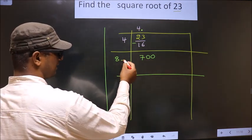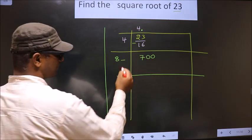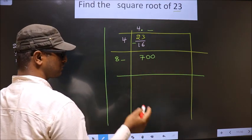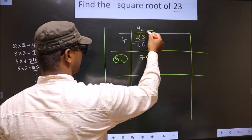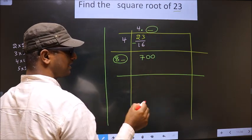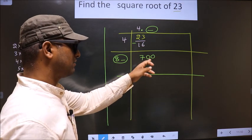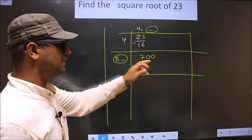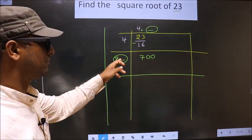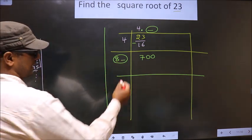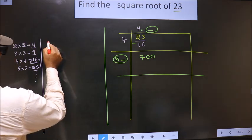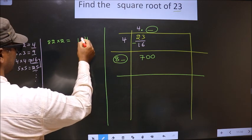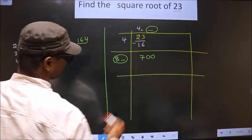I should write a number here. The condition is: whatever number I write here, I should write the same number alongside it, and when you multiply this number by this number, the resulting number should be either equal to or smaller than this, but not larger. If we take 2, that is 82 into 2: 2 times 2 is 4, and 8 times 2 is 16. So 164, which is far away from 700.